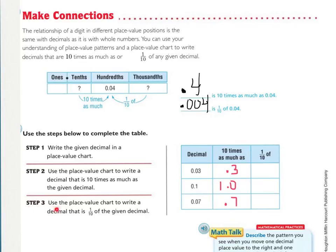Step three now says to use the place value chart to write a decimal that is one-tenth of the given decimal. So we're still working with the given decimal, but filling in one-tenth. And remember that the thousandths is one-tenth of hundredths. So if it's to the right on the place value chart, it is one-tenth of the place value to its left. So one-tenth of three hundredths is three thousandths, one-tenth of one-tenth is one-hundredth, and one-tenth of seven-hundredths is seven-thousandths.